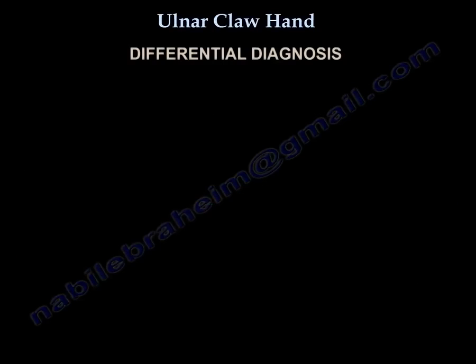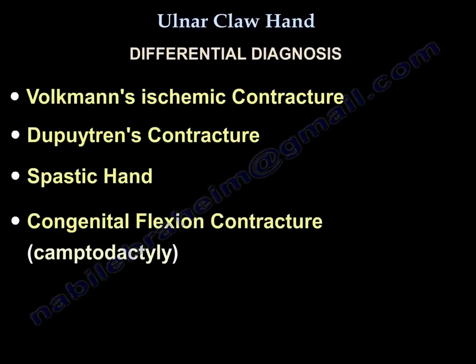Differential diagnosis of claw hand includes Volkmann's ischemic contracture, Dupuytren's contracture, spastic hand, and congenital flexion contracture, which is called camptodactyly.